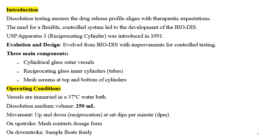There are three main components: cylindrical glass outer vessels, reciprocating glass inner cylinders or tubes, and mesh screens at the top and bottom of the cylinders. You can visit USP for more understanding about all these parts.